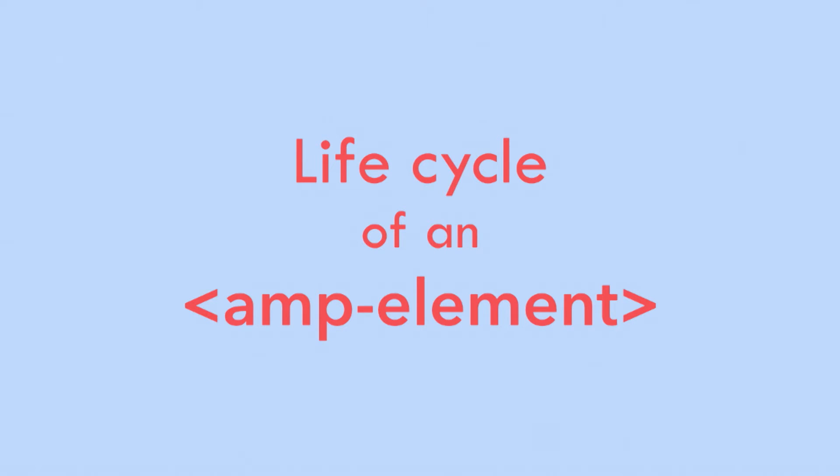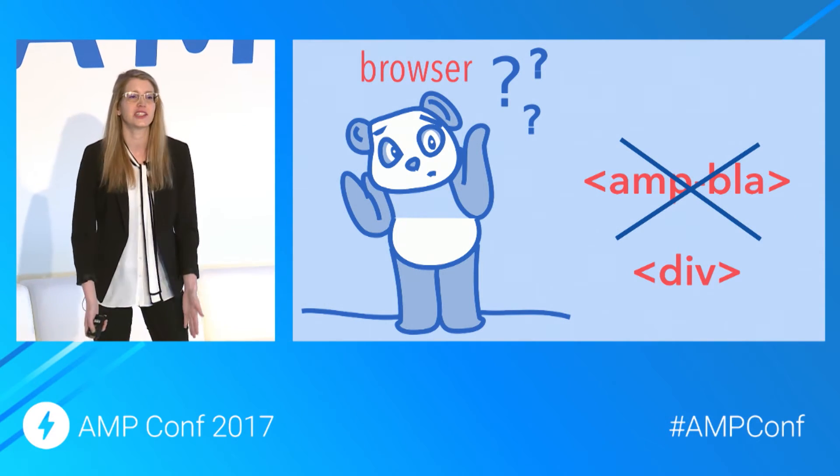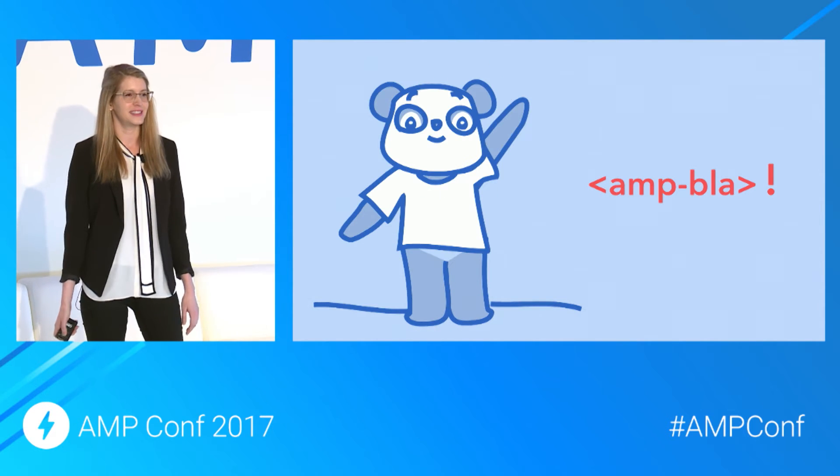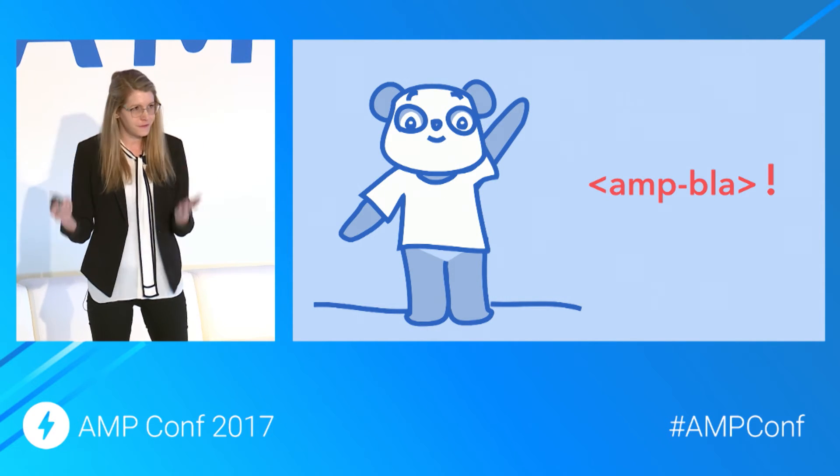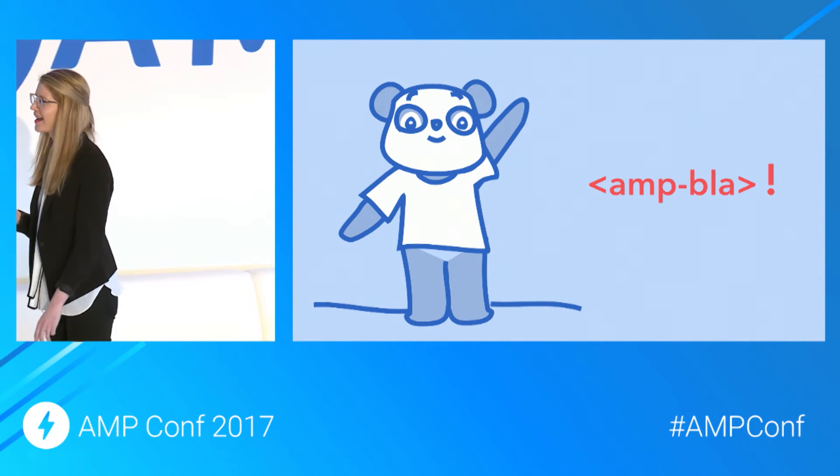Let's talk about the lifecycle of an AMP element. Initially, an AMP element starts off in a state of 'not built.' The browser sees this element for the first time before the JavaScript has loaded, and for that split second it has no idea what it is, so it treats it like a div. Because CSS is inline and already there, the user won't see anything different. Eventually the JavaScript loads, and the AMP element is upgraded to an official AMP element and the browser knows exactly what to do.